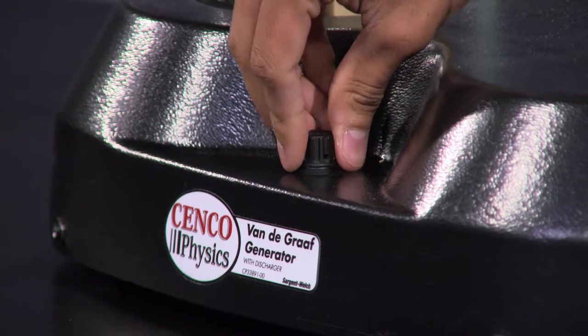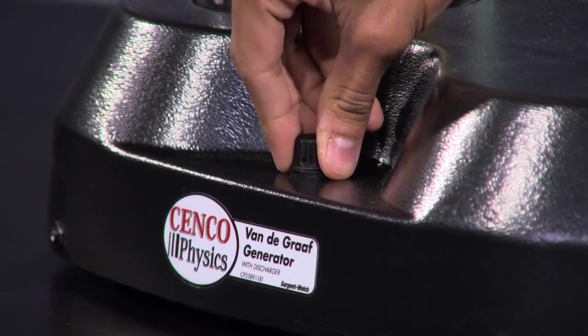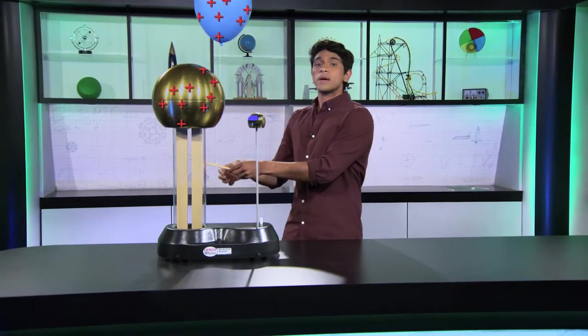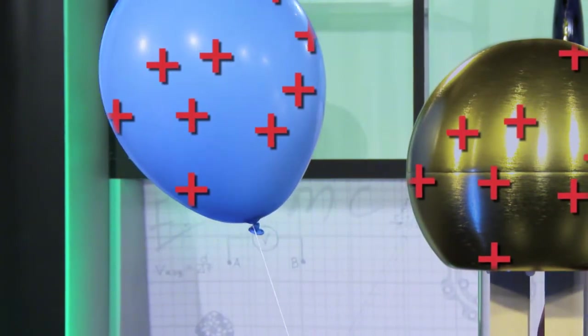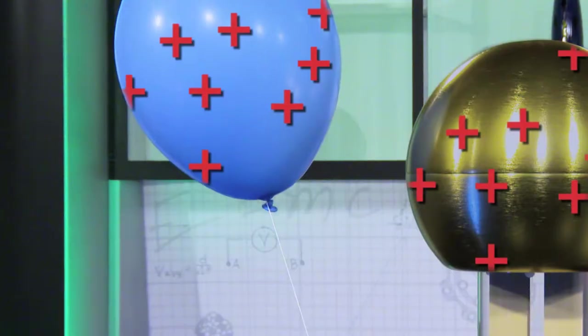What do you think will happen when I move the balloon close to the bell after they're both positively charged? Well, let's find out. I'm giving this balloon a positive charge by making it touch the generator. Now when I put it near the positively charged bell, it's repelled. Why? Because like repels like.